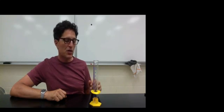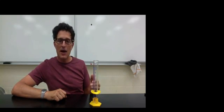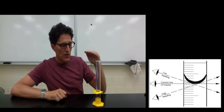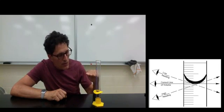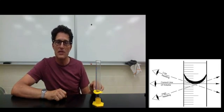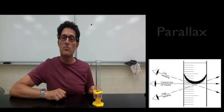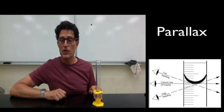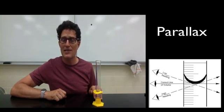Next, you want to make sure that you're reading the volume at eye level, which means that you need to move your head down to the volume in the graduated cylinder to avoid something called parallax. And I'm expecting that you'll research parallax and find out what exactly the problem is that it creates.